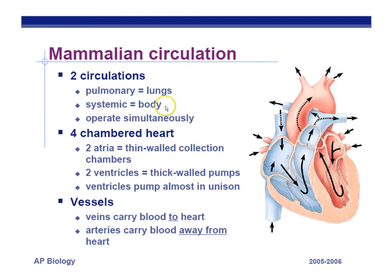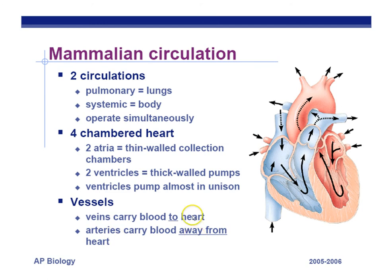We have two circuits — pulmonary goes to the lungs, systemic goes to the body. Four-chambered heart in mammals and birds, focusing on mammals. We have two atria — thinner-walled cardiac muscle — and two ventricles, very thick. The atria are only pumping a short distance into the ventricles, almost like a holding area. The ventricles have a much thicker wall, especially the left ventricle, which pumps blood to all the cells of your body and never gets a break. Veins carry blood to the heart; arteries away from the heart. Artery starts with A; away starts with A — that's how to remember it.